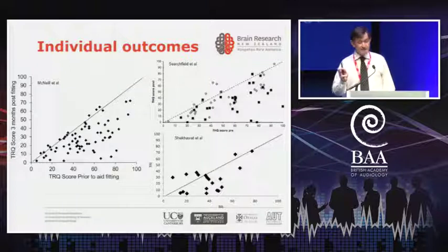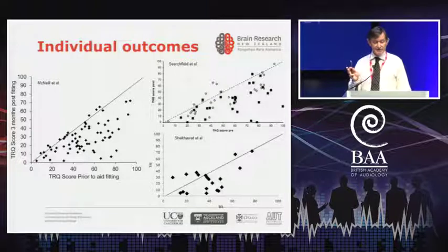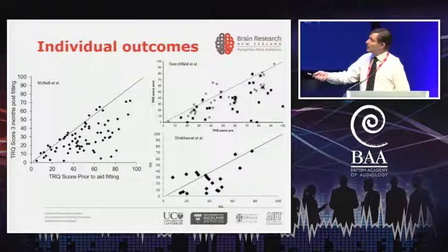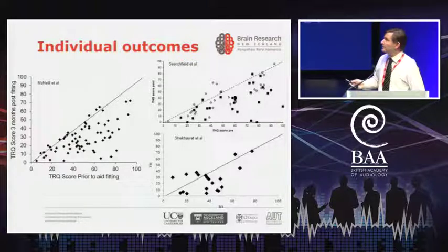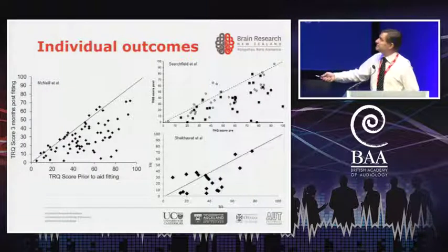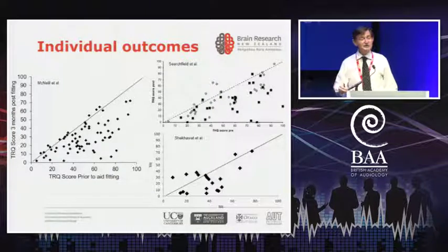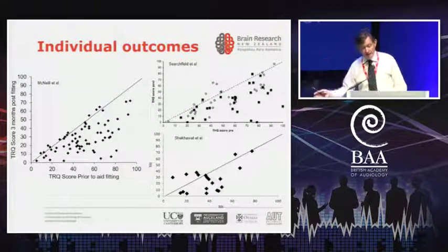Here are three trials I've been involved in. Each of the black diamonds or squares represents an individual who received hearing aids. Anything that falls below the line represents an improvement in tinnitus over time — this study is over 12 months, this one 12 months, and this one six months. The open symbols in one study represent individuals who received counselling but did not receive hearing aids, while in another study individuals received hearing aids with no counselling.